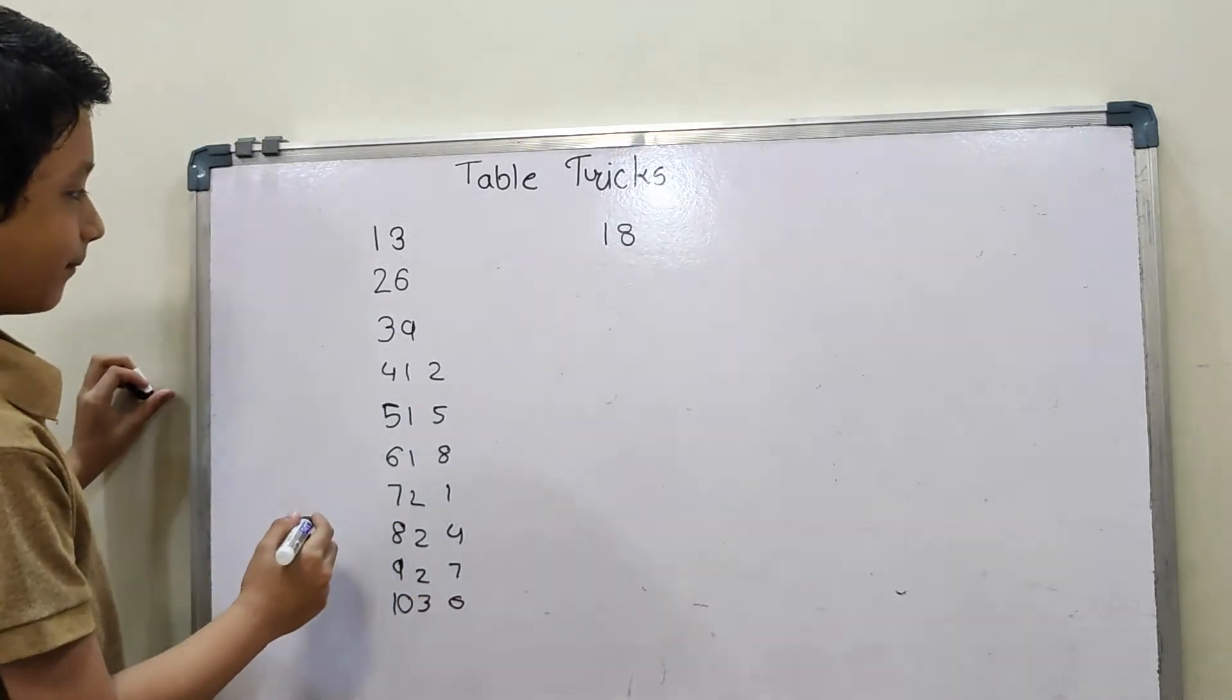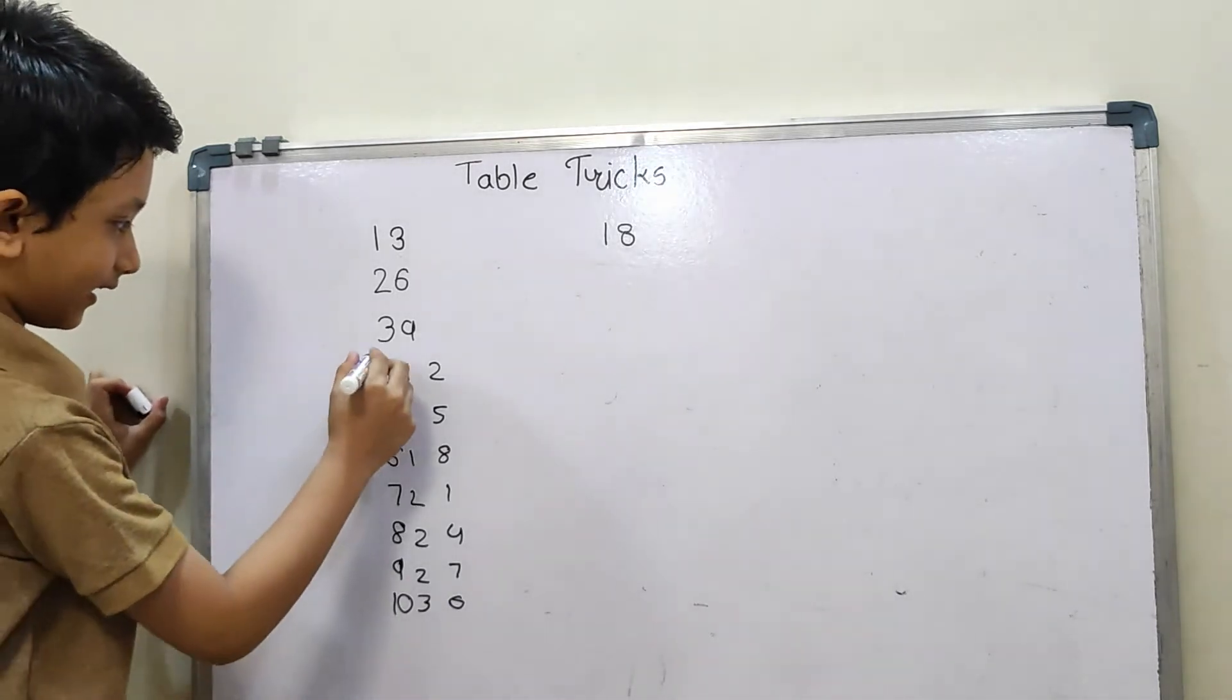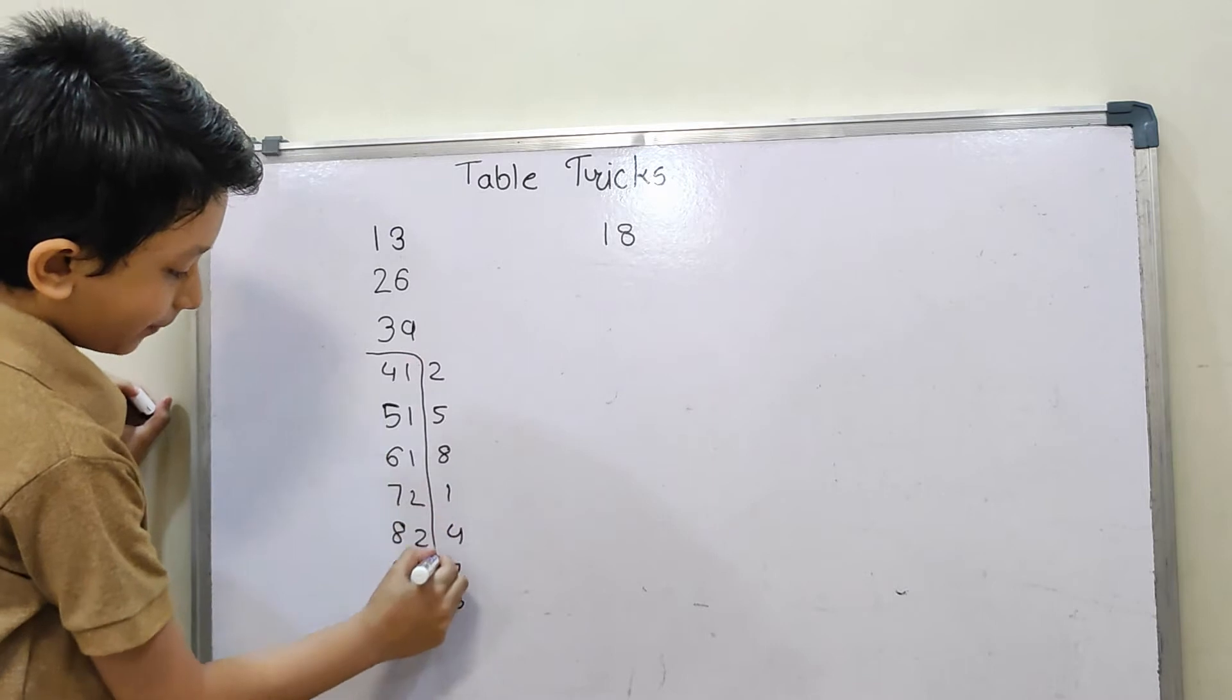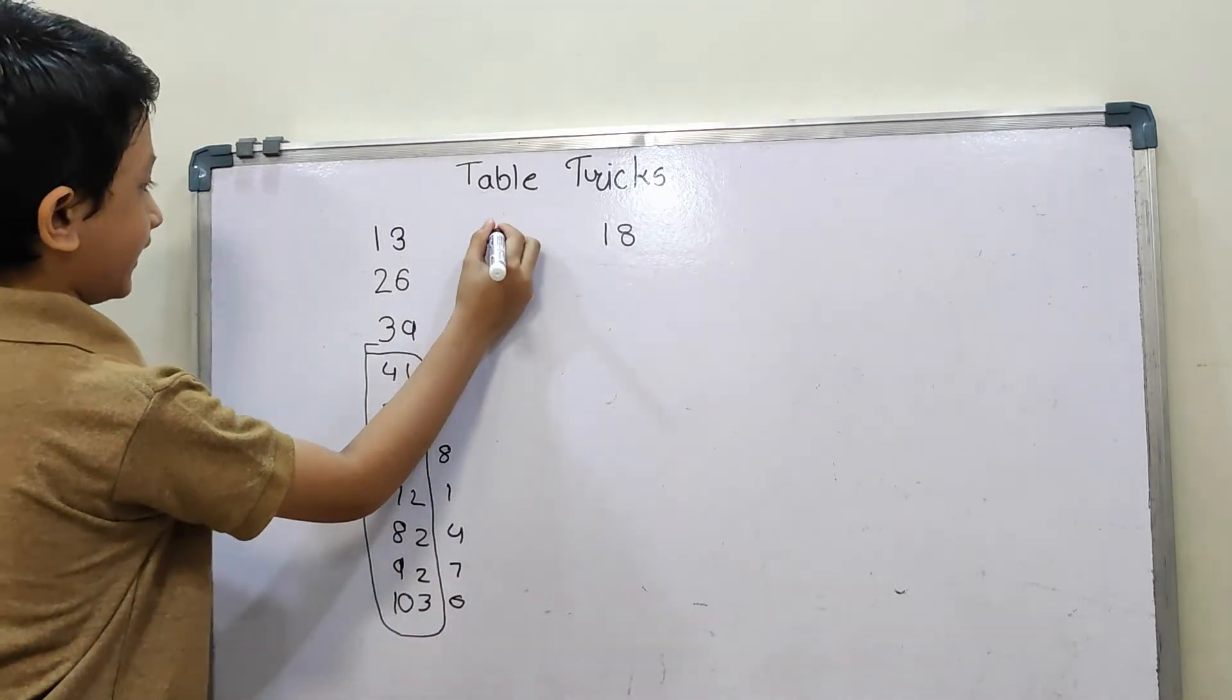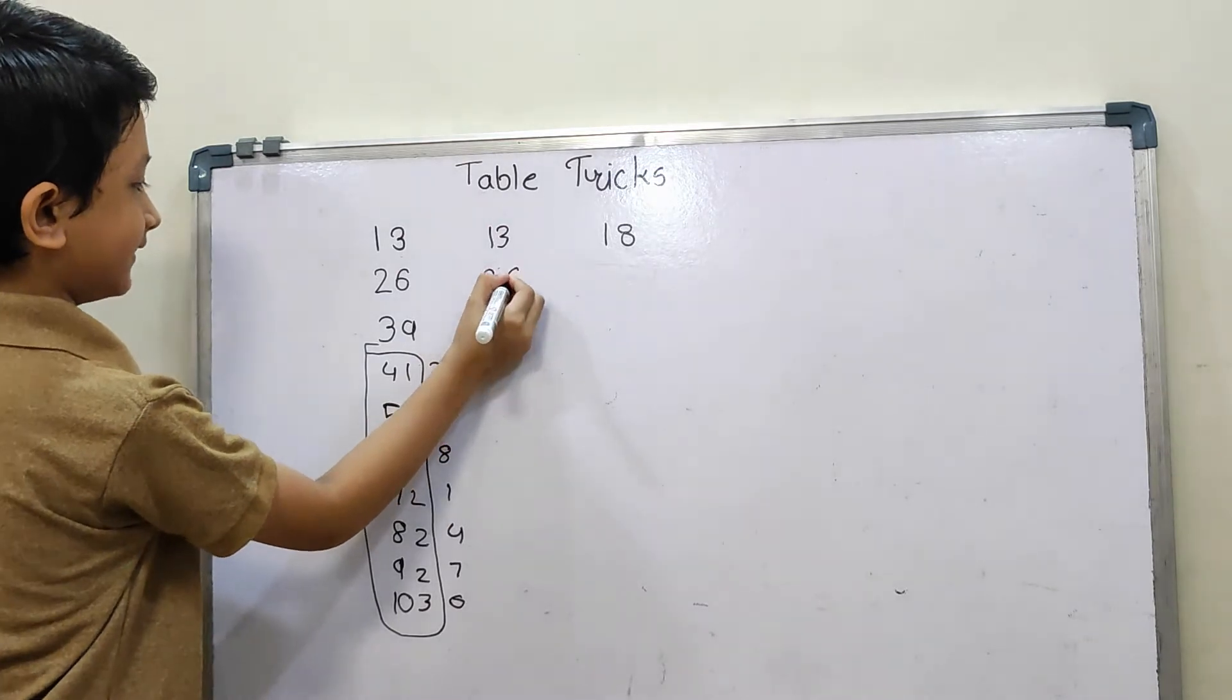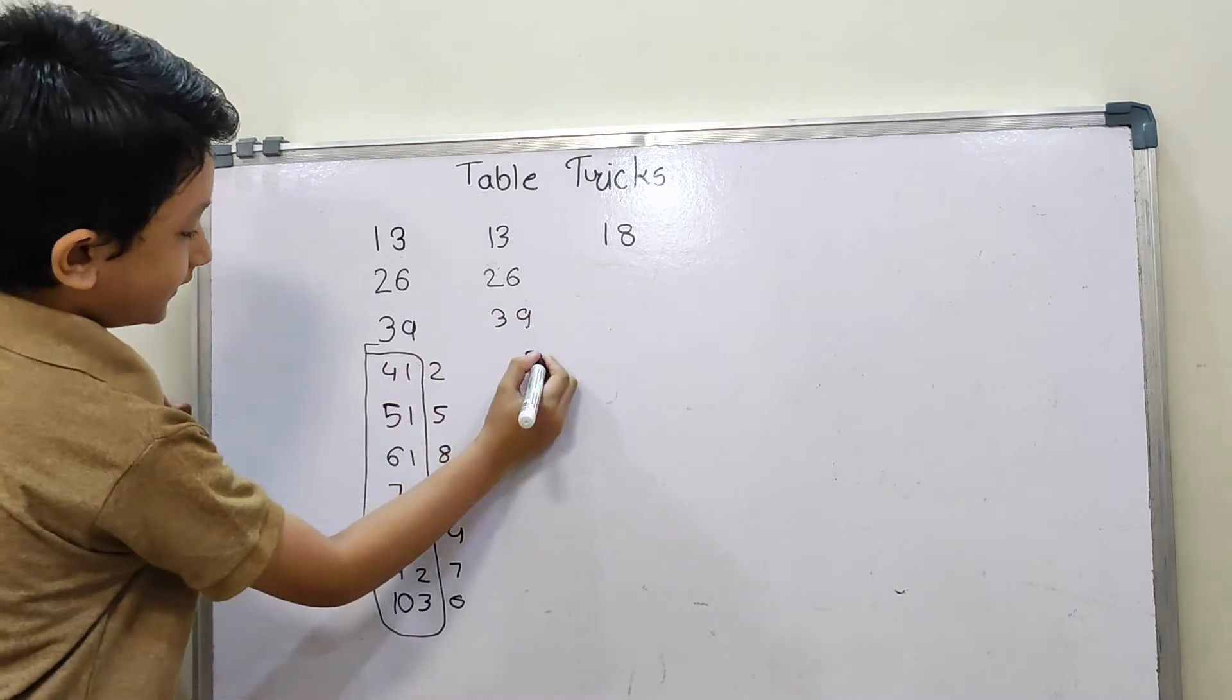Then we are going to add these digits. So first, 13 as it is, 26 as it is, 39 as it is, and then 2 as it is.